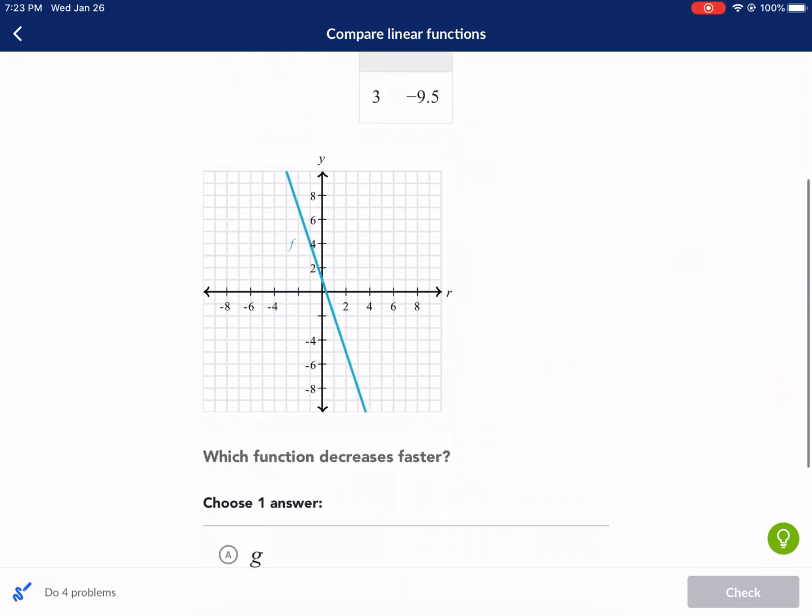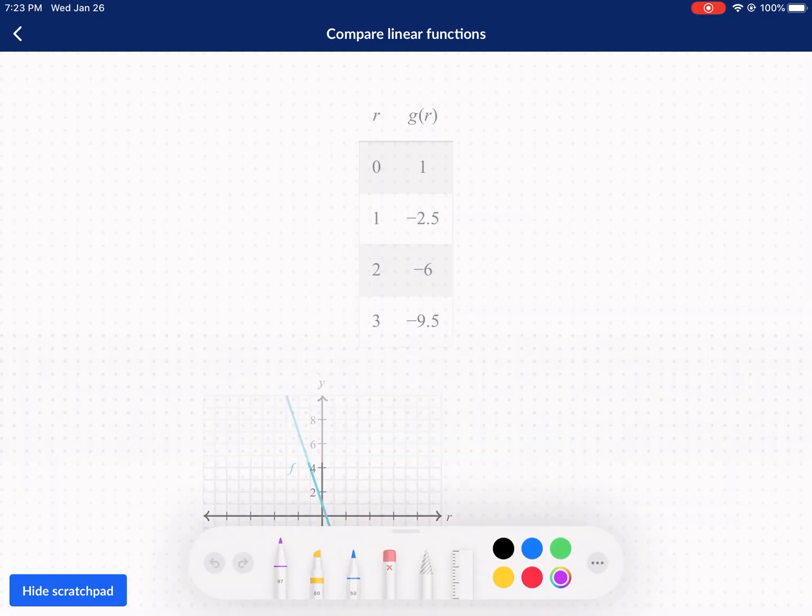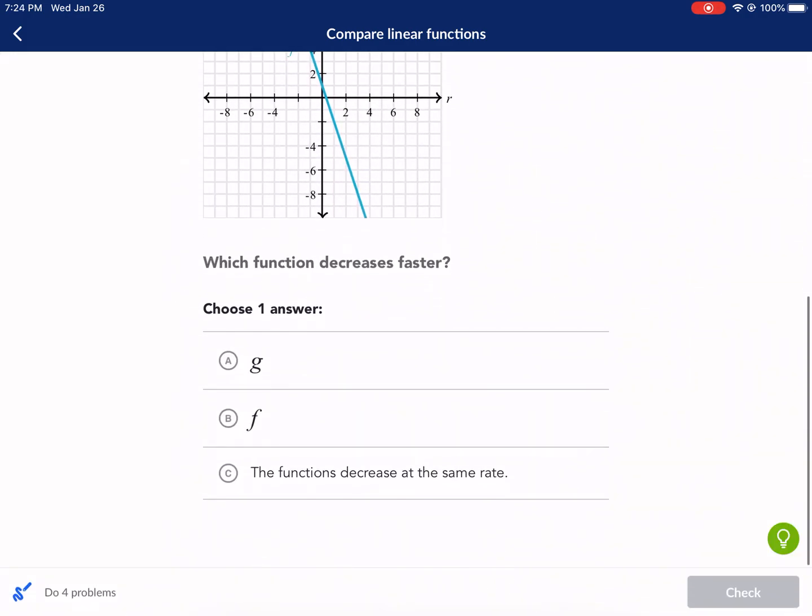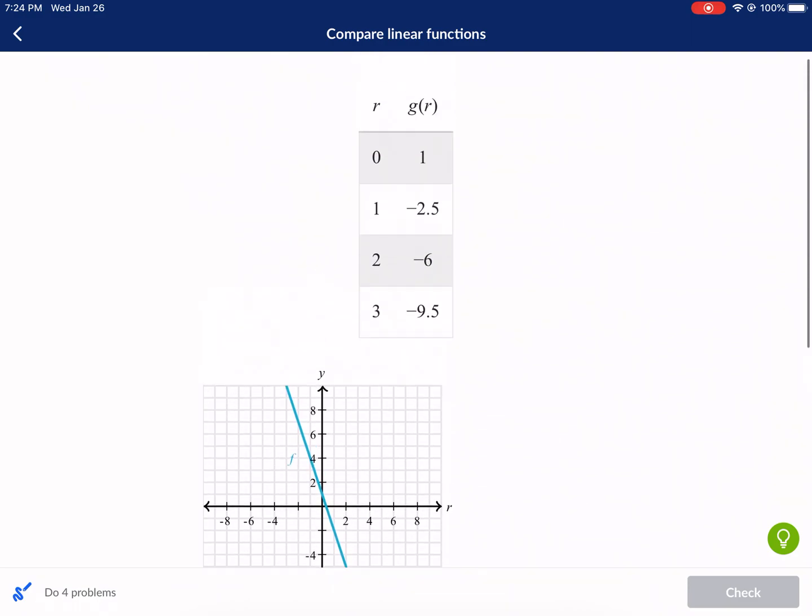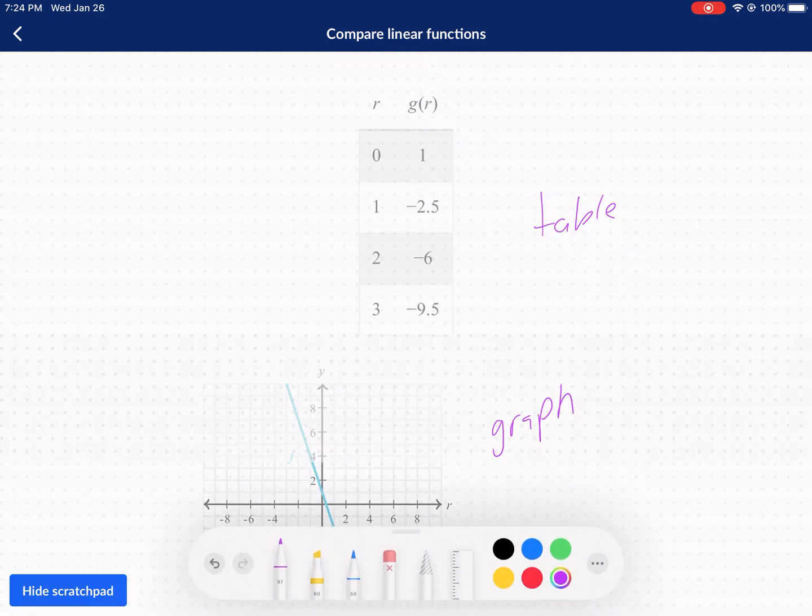Okay, so we have two different ways that these graphs are represented. One is a table, which is right here, this is a table on the top one, and we have a graph down here. And we're asked which function decreases faster. When we're talking about increase and decrease, we're talking about the slope of a function, and that is the rise over the run.